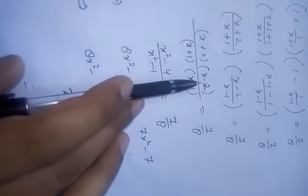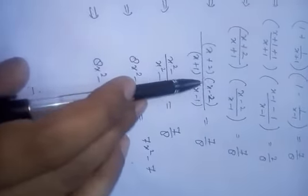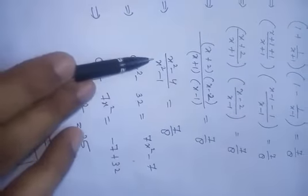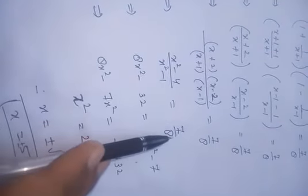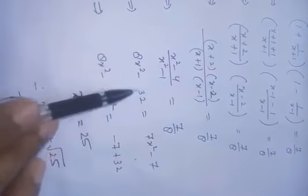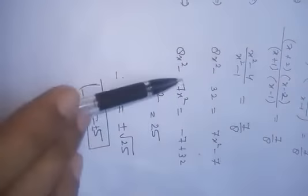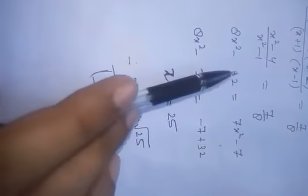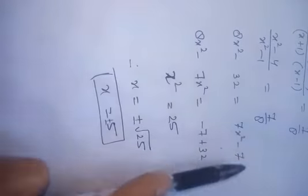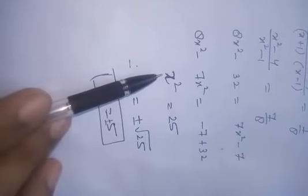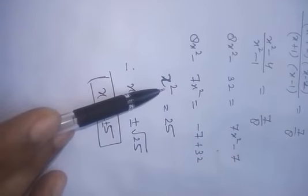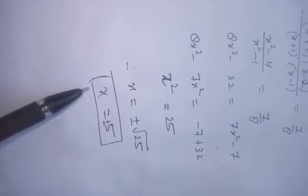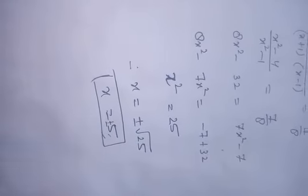Apply the (a+b)(a-b) = a² - b² formula, giving x² - 1 = 7/8 on the left side. Now do cross multiplication: 8x² - 8 = 7, so 8x² = 25, giving x² = 25/8. Taking the square root: x = ±5 (under the appropriate root). This is the required solution.